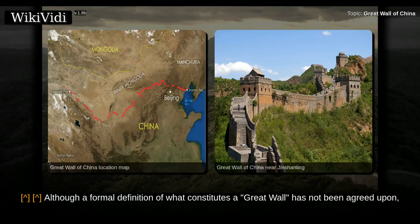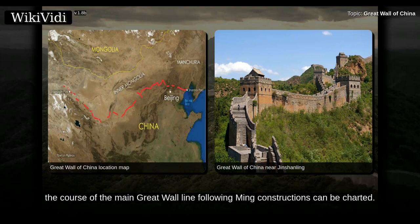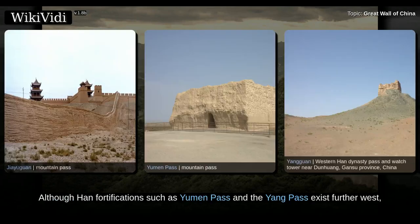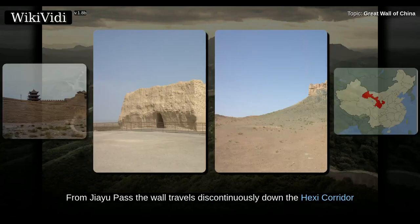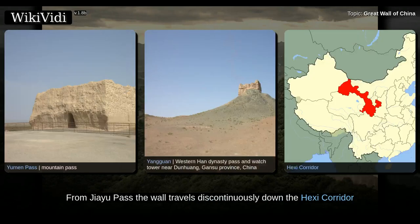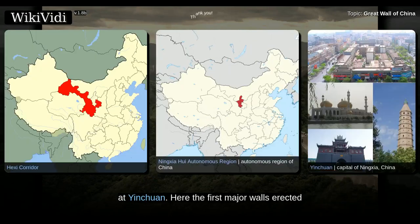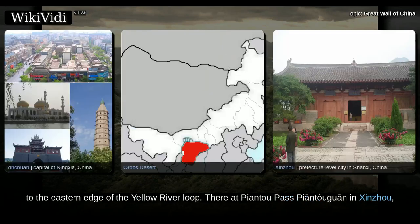Although a formal definition of what constitutes the Great Wall has not been agreed upon, the course of the main Great Wall line following Ming constructions can be charted. The Jiayuguan Pass, located in Gansu Province, is the western terminus of the Ming Great Wall. Although Han fortifications such as Yumen Pass and Yang Pass exist further west, the extant walls leading to those passes are difficult to trace. From Jiayuguan Pass, the wall travels discontinuously down the Hexi corridor and into the deserts of Ningxia, where it enters the western edge of the Yellow River loop at Yinchuan.